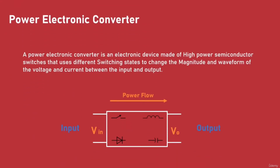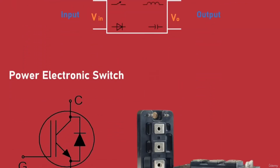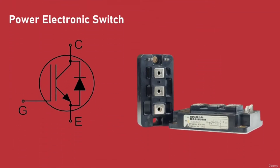A power electronic converter is an electronic device made of high-power semiconductor switches that uses different switching states to change the magnitude and waveform of the voltage and current between the input and output. A semiconductor switch is the basic building block of any power electronic converter.